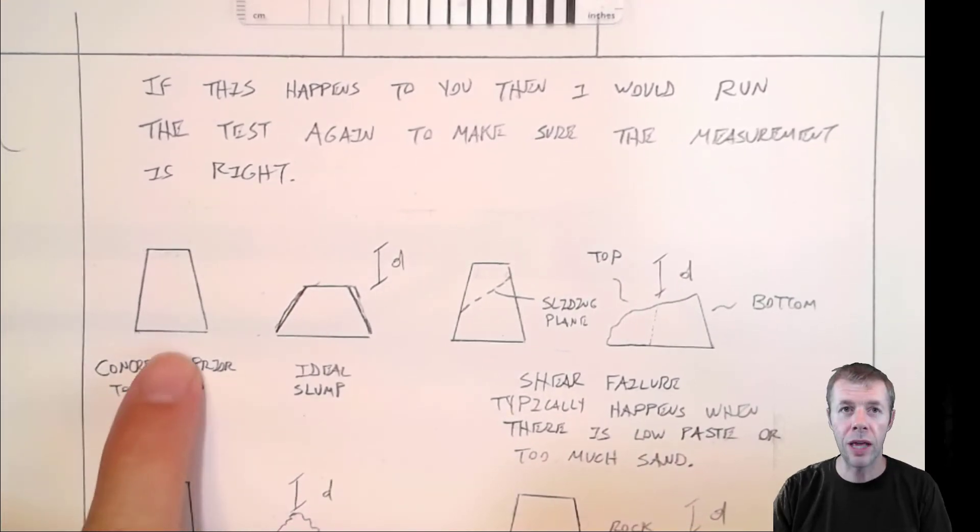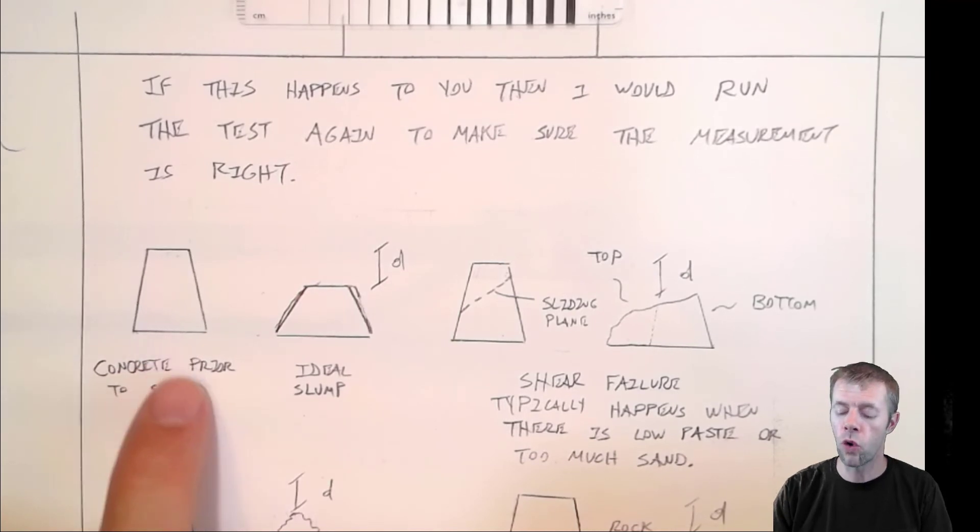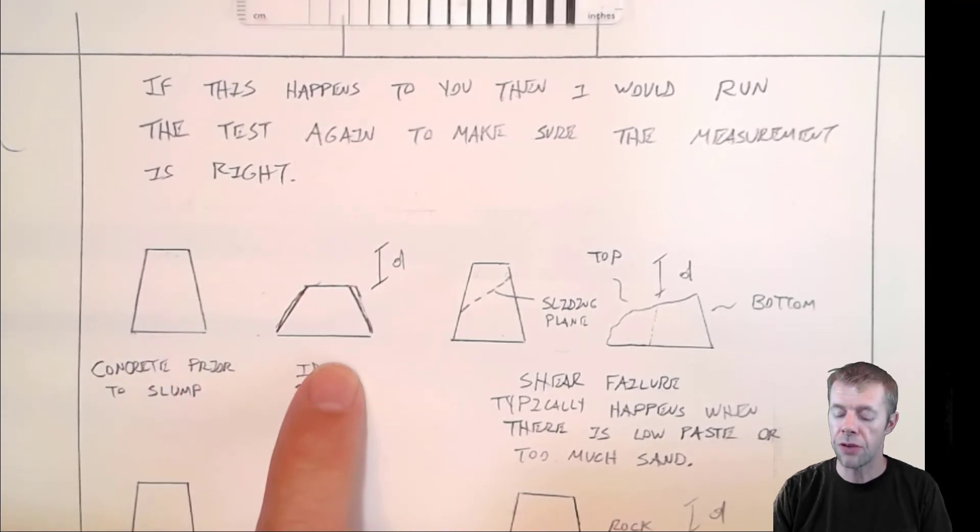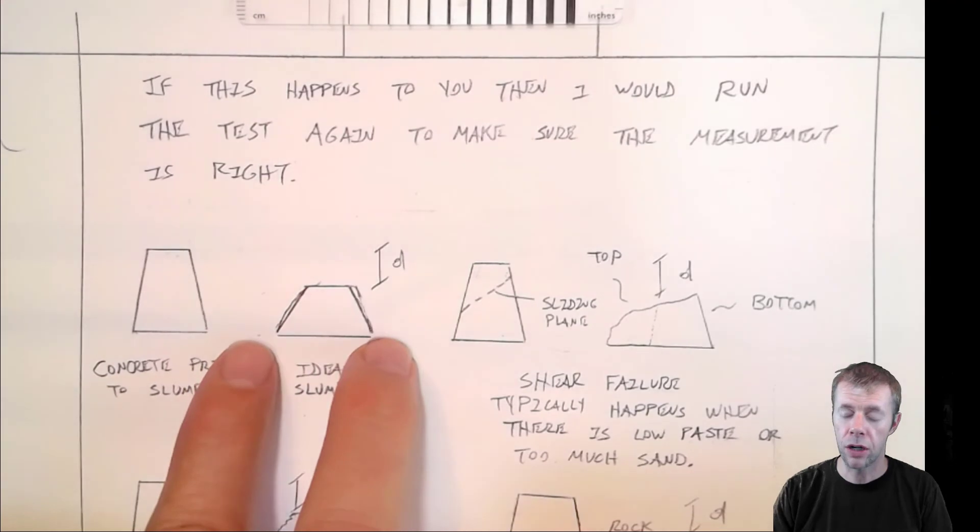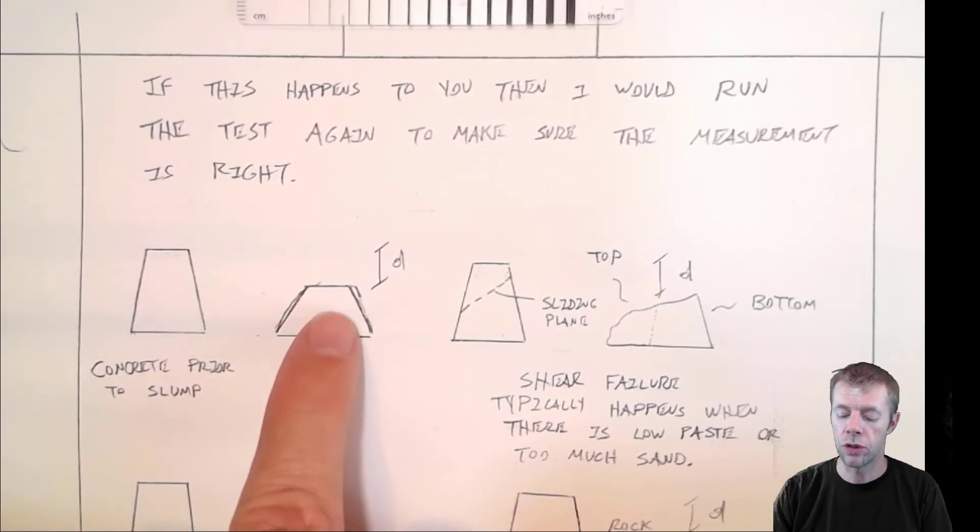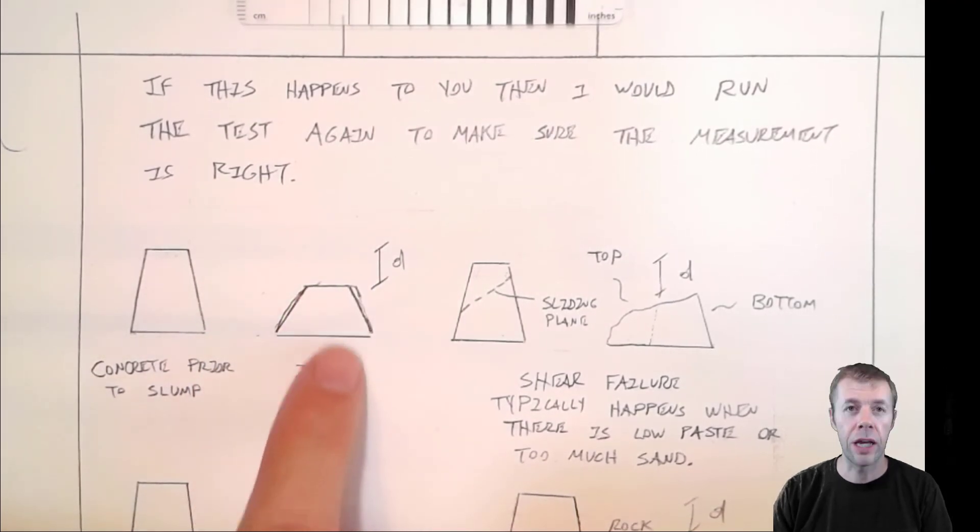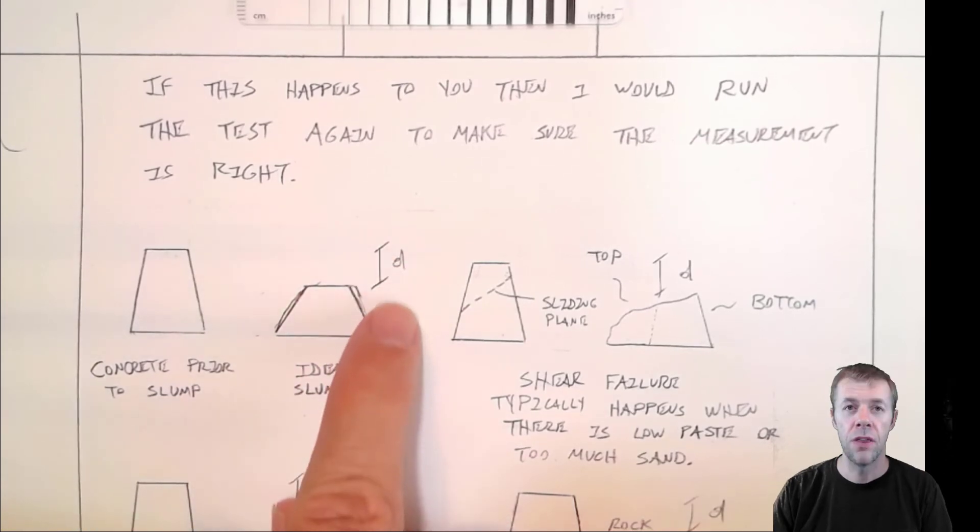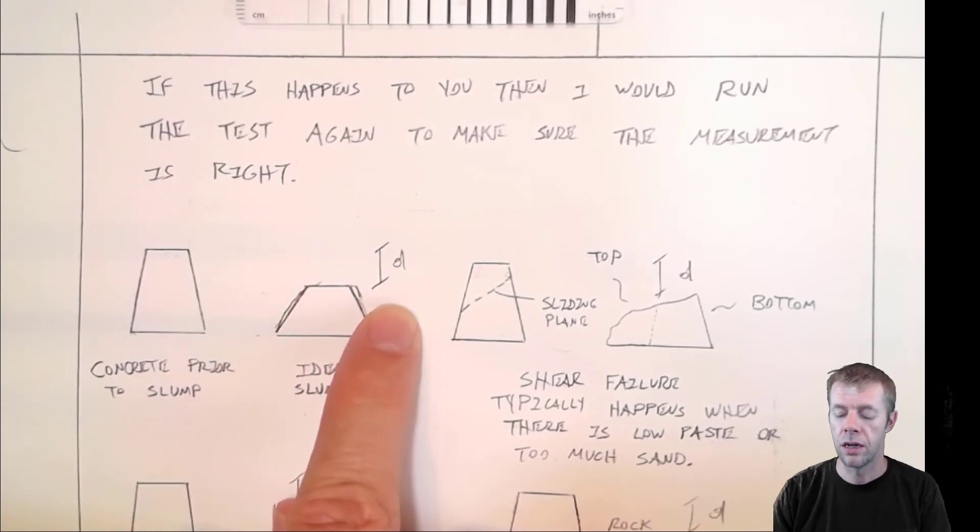Let's first start out with what's right. Typically in a slump test, it starts out like this. And then once you pull the forms off, it falls down. As in, the bottom gets wider, the top falls downward. Okay, looks something like this. And again, this would be the slump or the height that it fell.